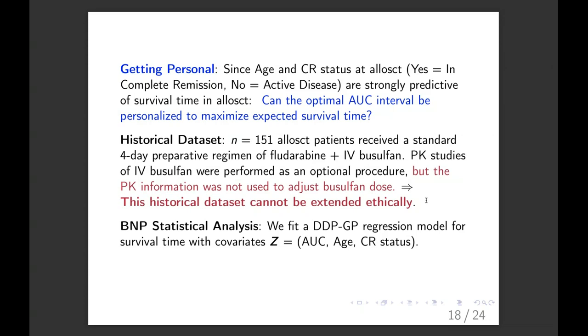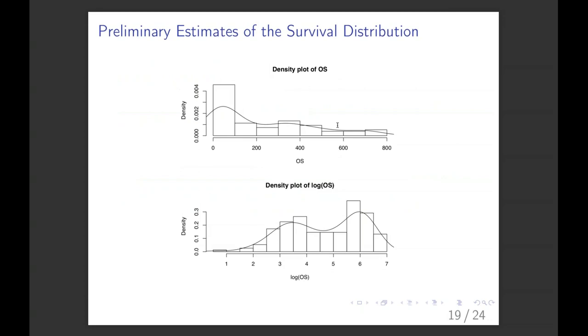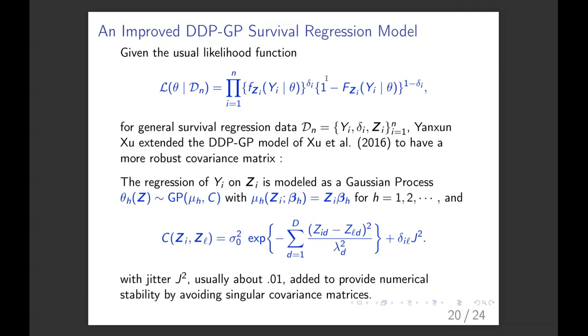And so what we did is we took an historical data set of 151 patients who had gotten allogeneic transplants with IV busulfan combined with this other stuff. But we can't extend this data set because it's no longer ethical to do this. And so we fit this dependent Dirichlet process with a Gaussian process prior. And here were the covariates. And it was the PK, the patients AUC, their age, and whether or not they were in remission. And you see that the plot of overall survival, it's anything but a nice unimodal distribution. So a Bayesian nonparametric model is great.